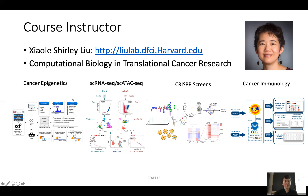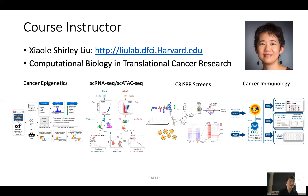On our website, we work on four things: cancer epigenetics, integrating single-cell RNA-seq with single-cell ATAC-seq, CRISPR screens, and cancer immunology. We develop a lot of algorithms. I do research at three levels: collaborating with biologists to analyze their data, developing computational tools for others to use, and using public data to directly make discoveries. We also participate in consortium team science.